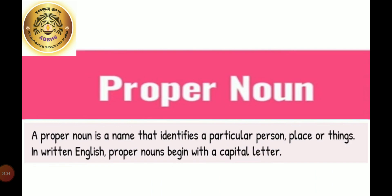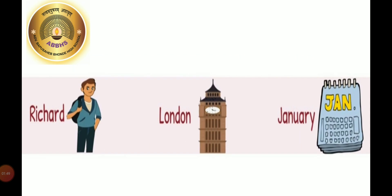Proper Noun: A proper noun is a name that identifies a particular person, place or thing. In written English, proper nouns begin with a capital letter. For example, Richard, London, January, etc.